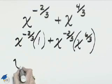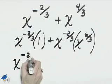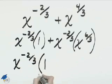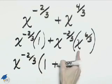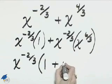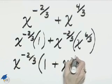Factor out the greatest common factor of x to the negative 2 thirds. We're left with 1 from the first term plus x to the 6 thirds, which is x squared, from the second term.